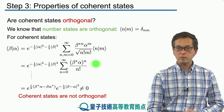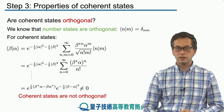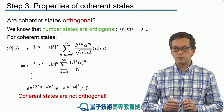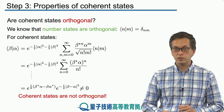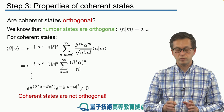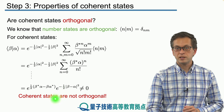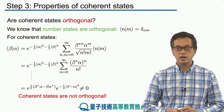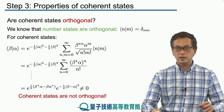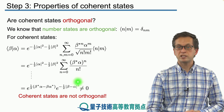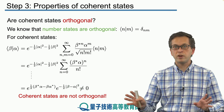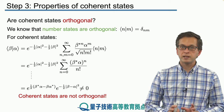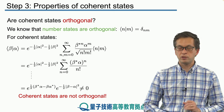For coherent states, they are never fully orthogonal. When the two states are close to each other — that is, beta and alpha are very close in terms of their modulus — the inner product is appreciable and they have quite a large overlap. But if you have two very different complex numbers, this overlap goes exponentially to zero. So for two very different complex numbers, we can say they are nearly orthogonal, but they are never fully orthogonal.